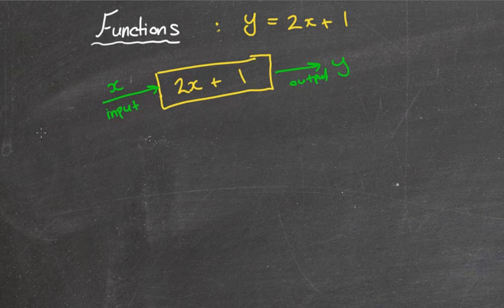For example, if we use this function machine and we threw in x equals 1 and we threw that into this machine, we'd get 2 lots of 1 plus 1 which would pop out the value of 3. So basically, you chuck in your x value and it comes out with a y value.